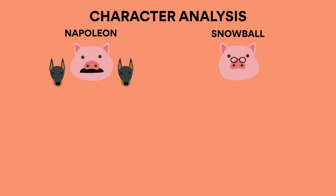Snowball. Based on Soviet rebel Leon Trotsky, he challenges Napoleon for control of the farm after Napoleon takes control of the leadership. Similar to the leader he is modeled after, Snowball is eloquent, charismatic, intelligent, and persuasive. Thus, he wins the loyalty and support of other animals easily.